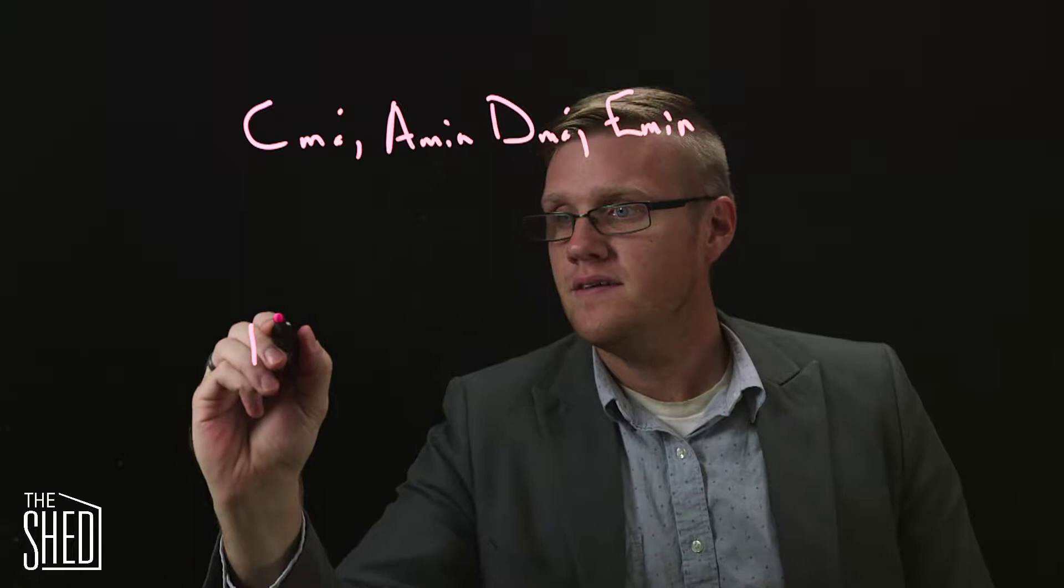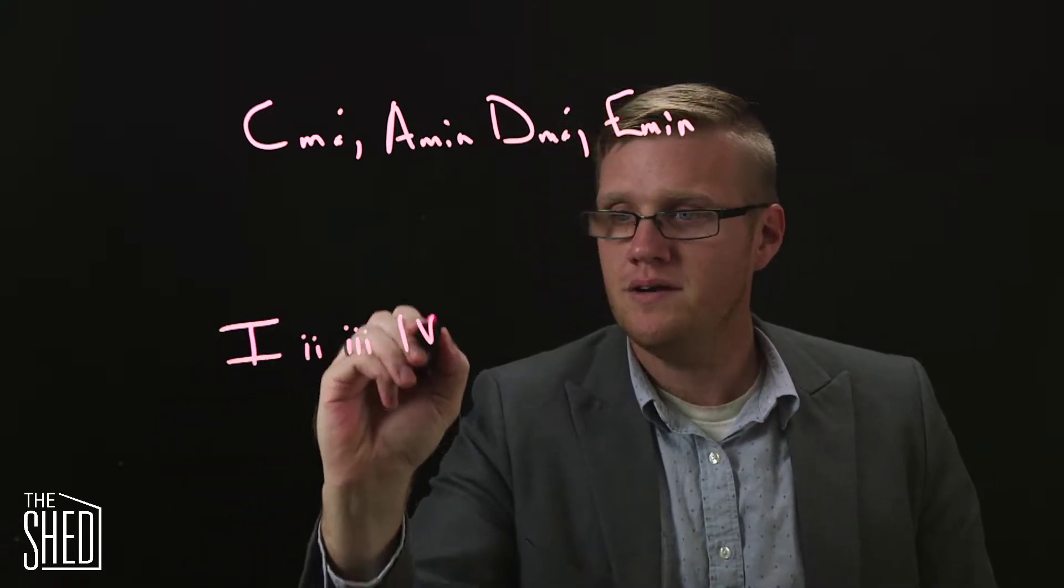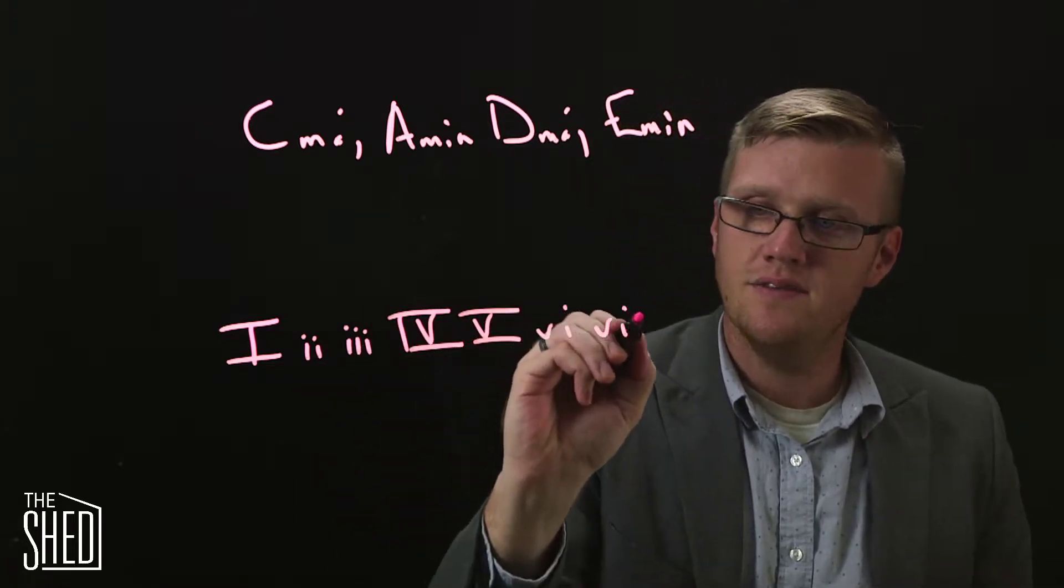And it starts by knowing your diatonic chords. So one is major, two and three are minor, four is major, five is major, six is minor, and seven is diminished.